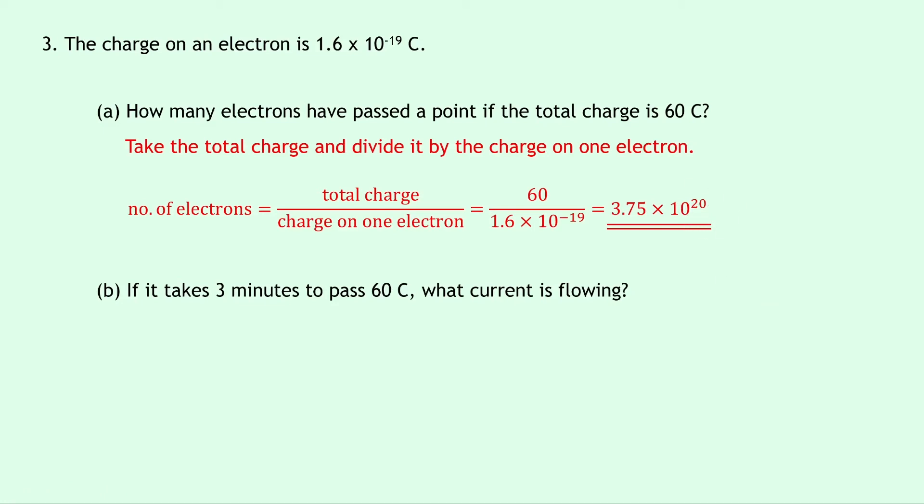Part b says if it takes 3 minutes to pass 60 coulombs, what current is flowing? Well writing down what we know from the question, we're trying to find the current I, we know the charge Q is 60 coulombs, and the time is equal to 3 minutes. But remember we don't use minutes in these calculations, we use seconds. So 3 times 60 gives us 180 seconds.